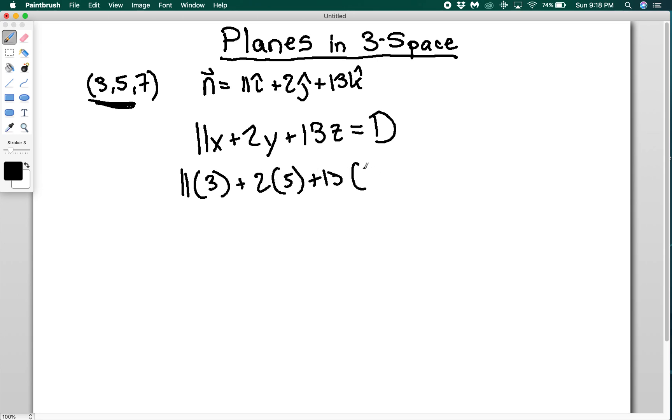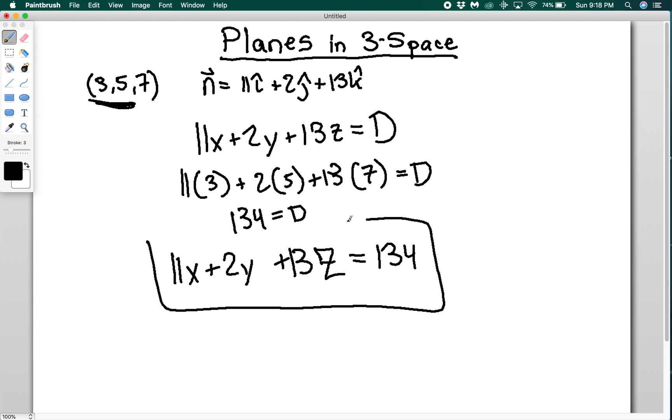And that's going to equal d. And when I do that, I get 134 is equal to my d value. So now I've found my constant. I know my coefficients already, so I can just rewrite my equation as 11x plus 2y plus 13z is equal to 134. And this would be my equation of the plane. And I would be done.